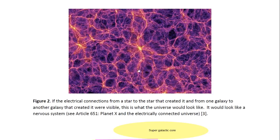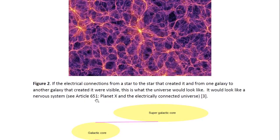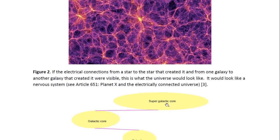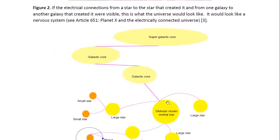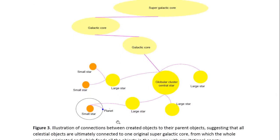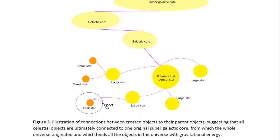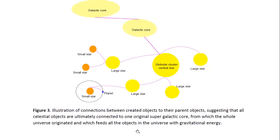You may look at Article 651 in Type Planet X and the Electrically Connected Universe. This is illustrated in this diagram as well — how a supergalactic core broke into smaller and smaller pieces and remains connected to everything that broke off from it, out of which the whole universe was created. Every planet and every small star is connected through its parent star, through the globular cluster central star, to a galactic core, to another galactic core, and eventually to that supergalactic core.